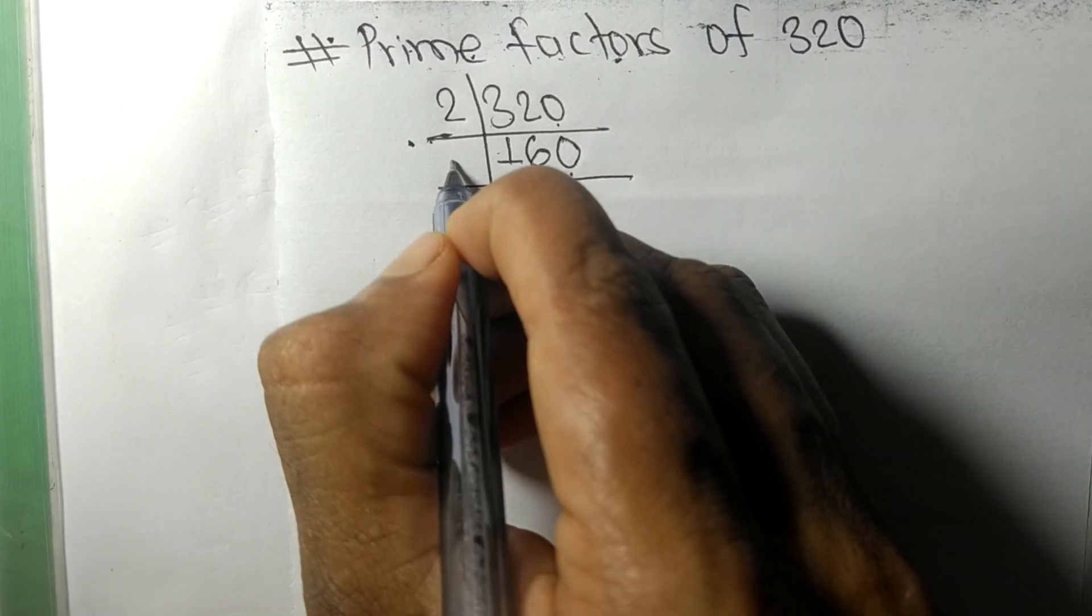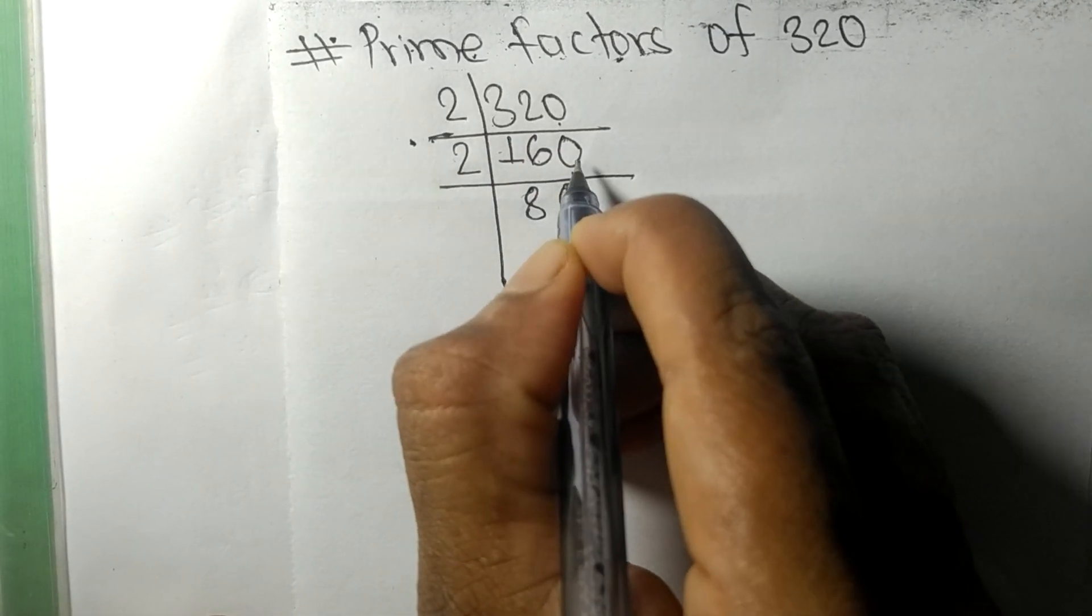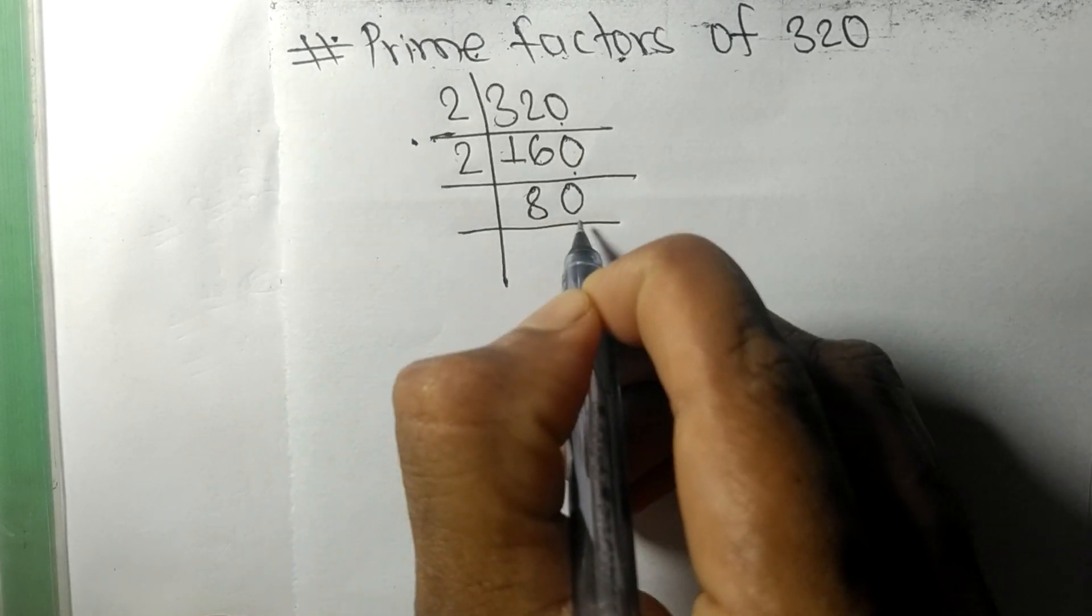2 times 8 is 16, 2 times 0 is 0. Again 0 at last, so divisible by 2.